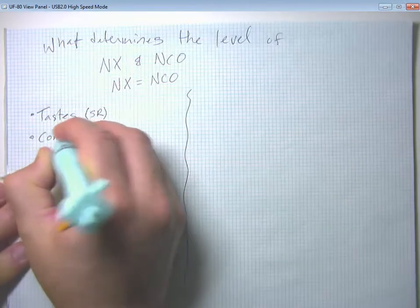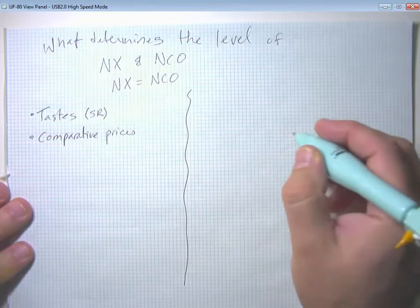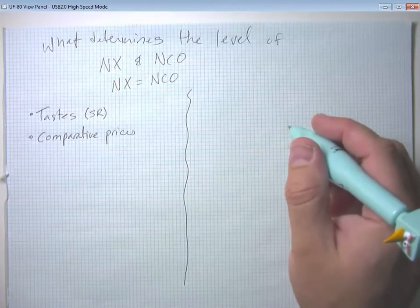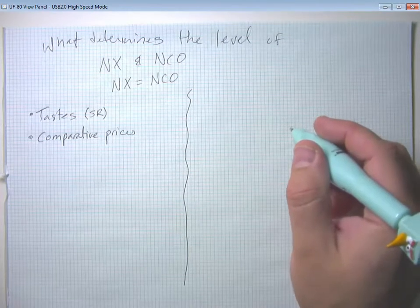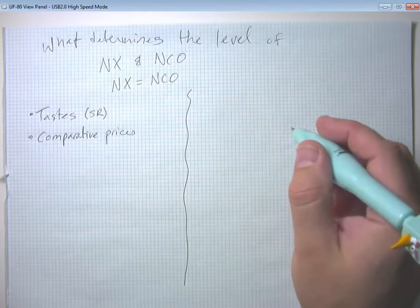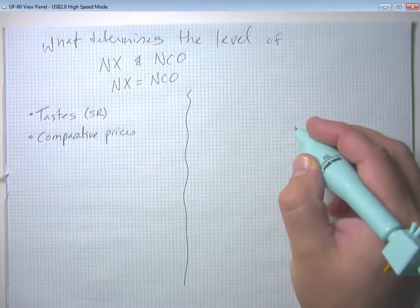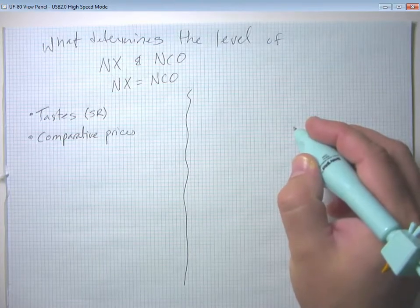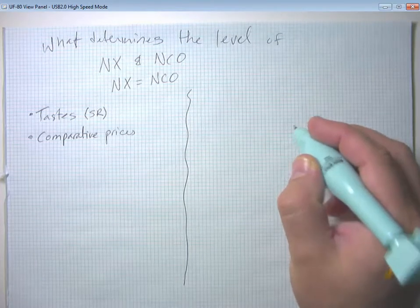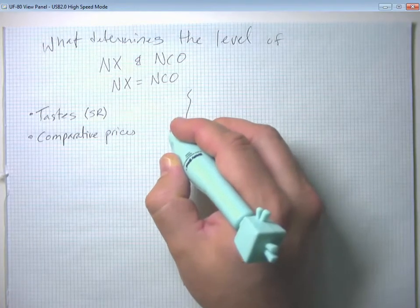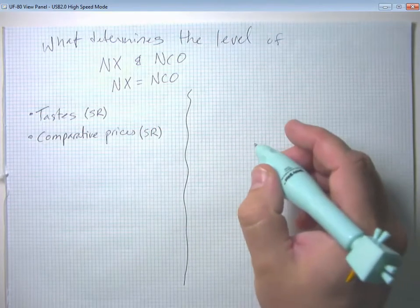Likewise, in the short run, swings in comparative prices influence net exports. So you can see if the United States is determined to import a certain amount of avocados from Mexico, and Mexico is determined to import a certain amount of corn from the U.S., then when avocado prices rise relative to corn prices, that's going to boost the Mexican exports to the U.S. and it's going to cause U.S. net exports to go down. And vice versa, if corn prices rise relative to avocado prices. And again, we think that this is mainly a sort of short run phenomenon.